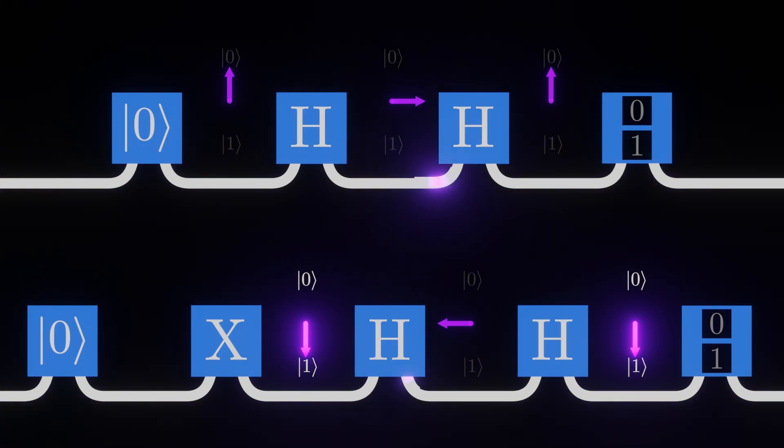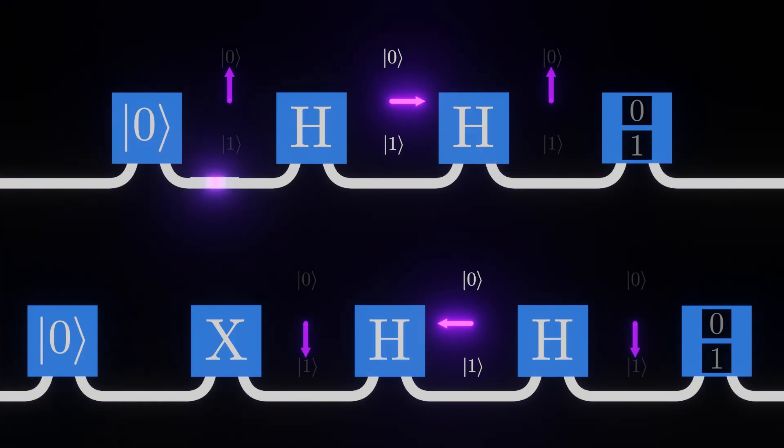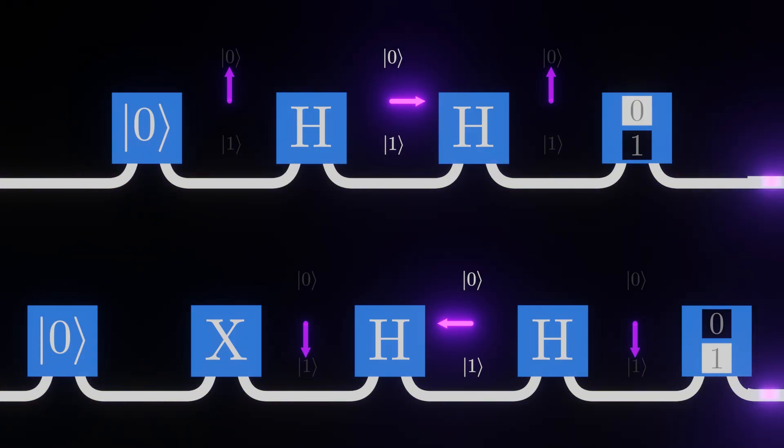The H gate turns 0 and 1 qubits into two different kinds of superpositions, allowing the second H gate to correctly undo the effect of the first. Notice though that each of these superpositions have the same chances of being 0 and 1, explaining why we didn't notice this effect when we measured after the first H gate.